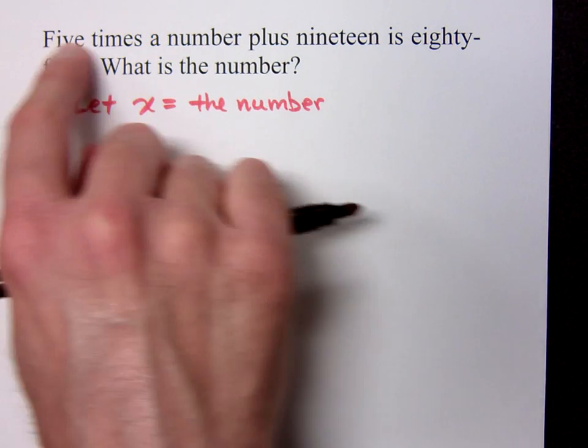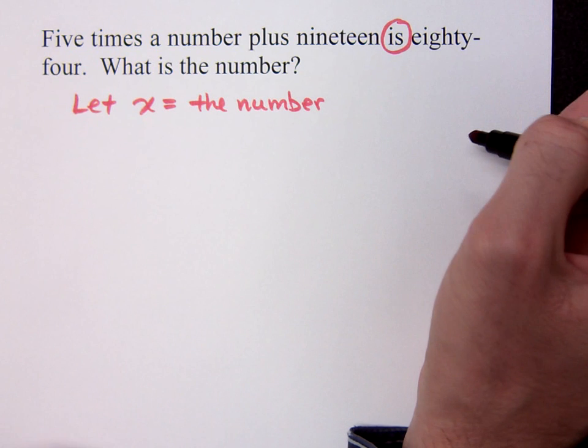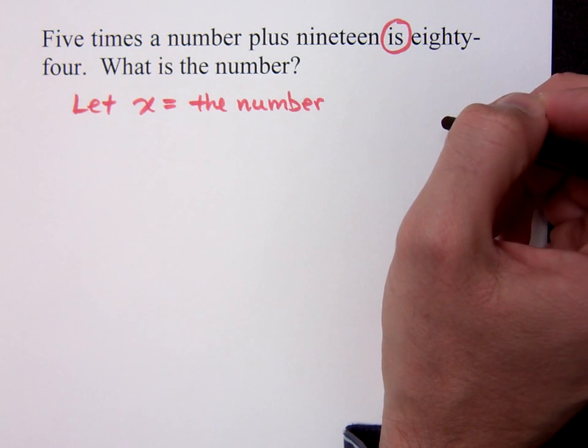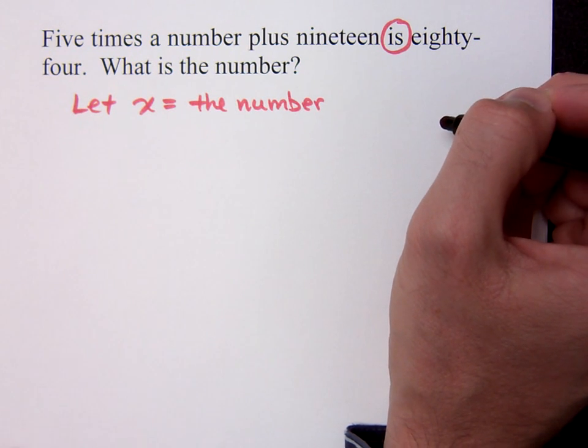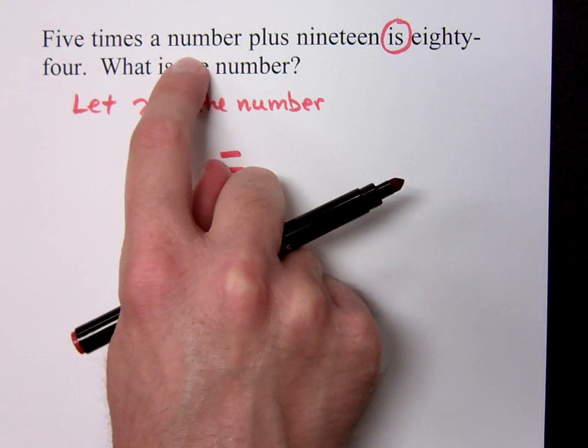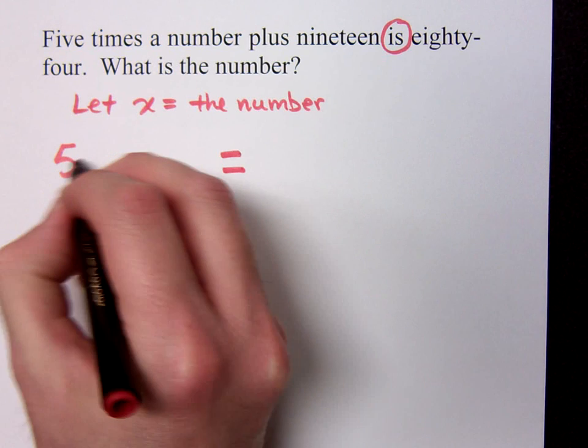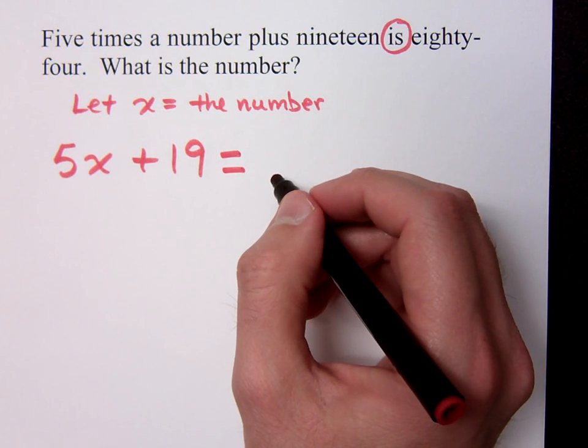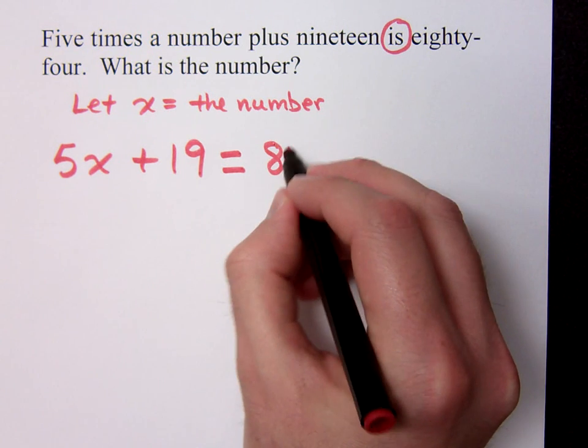Now, read this. This first sentence tells you what your equation is. And there's your is. And I'm circling is because this is important for us to find. Is tells you your equal sign. So before the equal sign, what do you see? Five times the number plus 19. How does that translate? Five x plus 19. Five x plus 19 is or equals, right? What? 84.